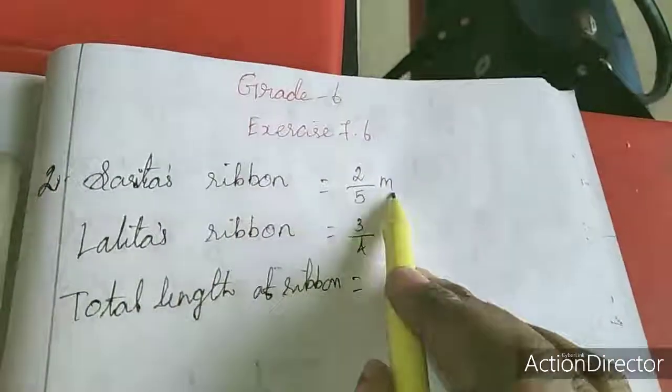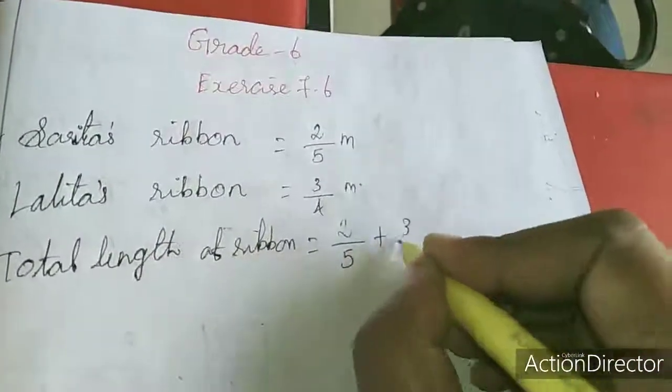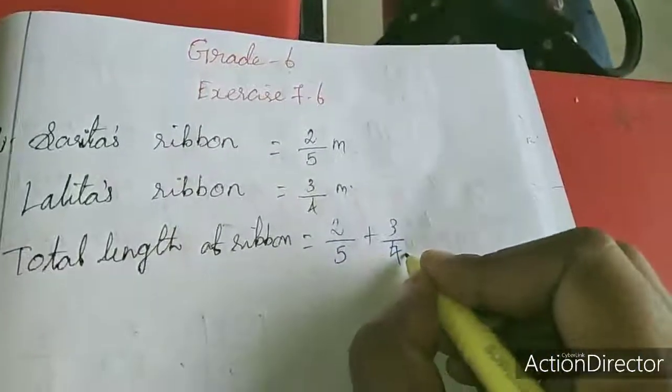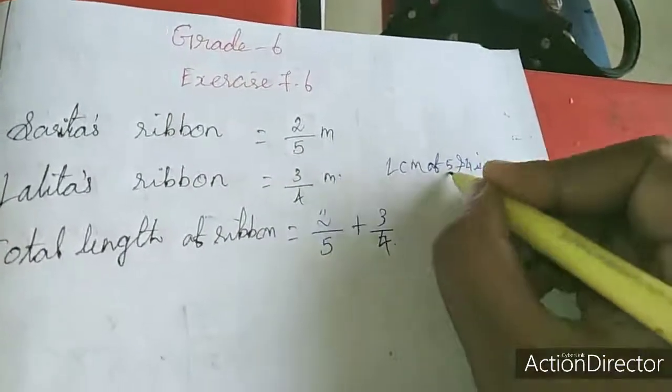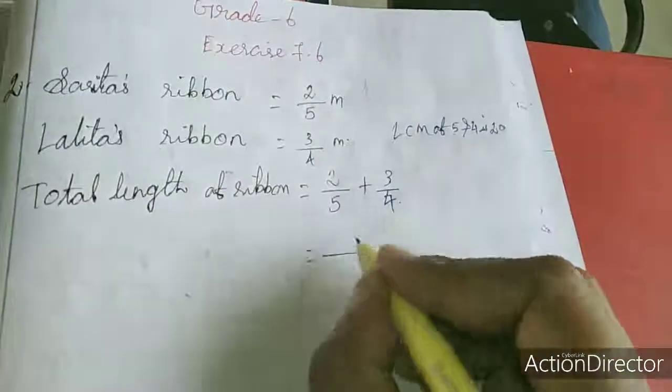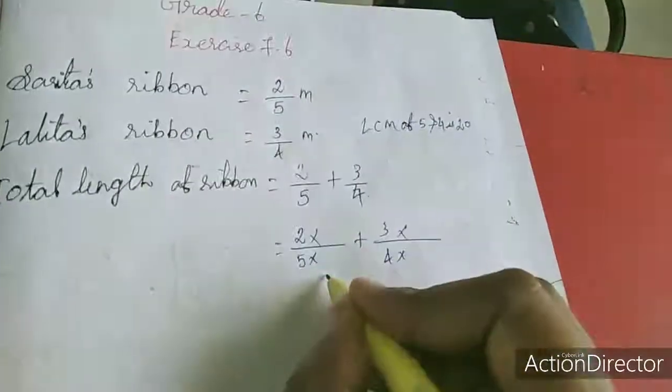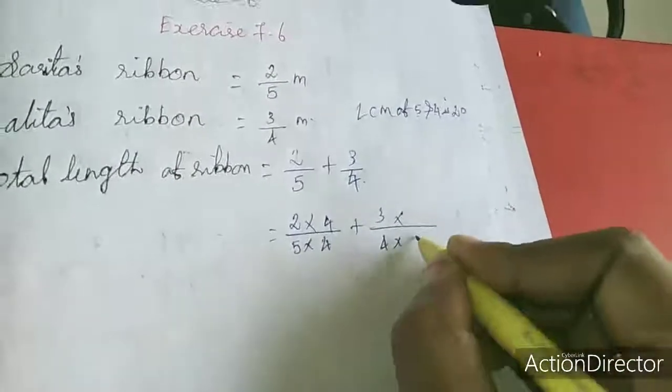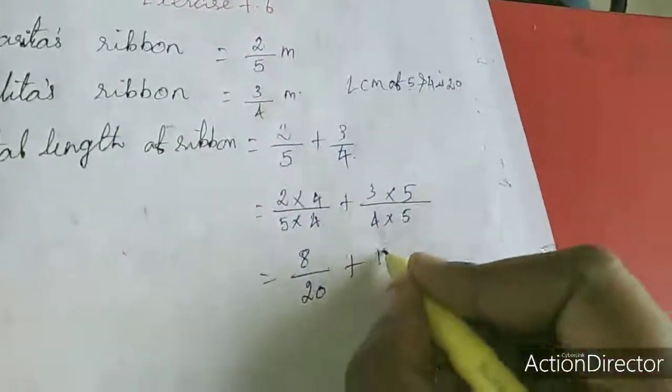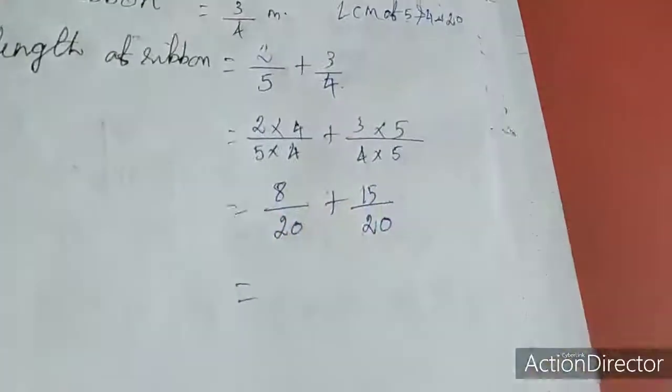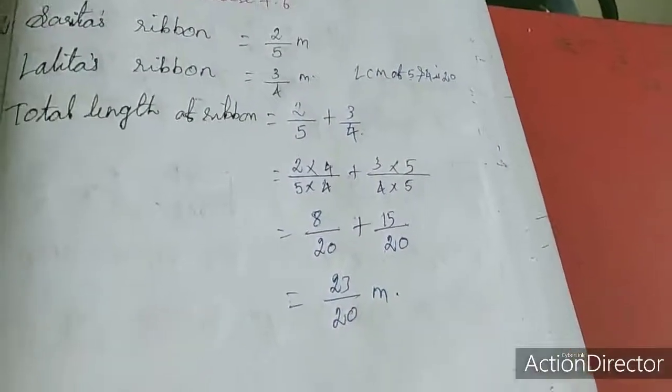Saritha's ribbon length is 2 by 5 meter, Lalitha's ribbon length is 3 by 4 meter. Total length, so we have to add 2 by 5 plus 3 by 4. So we have to equalize the denominator. LCM of 5 and 4 is 20, because there is no common factor between this. I am going to change the denominator as 20. 5 into which number gives 20? 4. So 2 fours are 8. 4 into which number? 5. So 20 plus 15 by 20. If you add, you will get 23 by 20 meter. This is the answer for second sum.